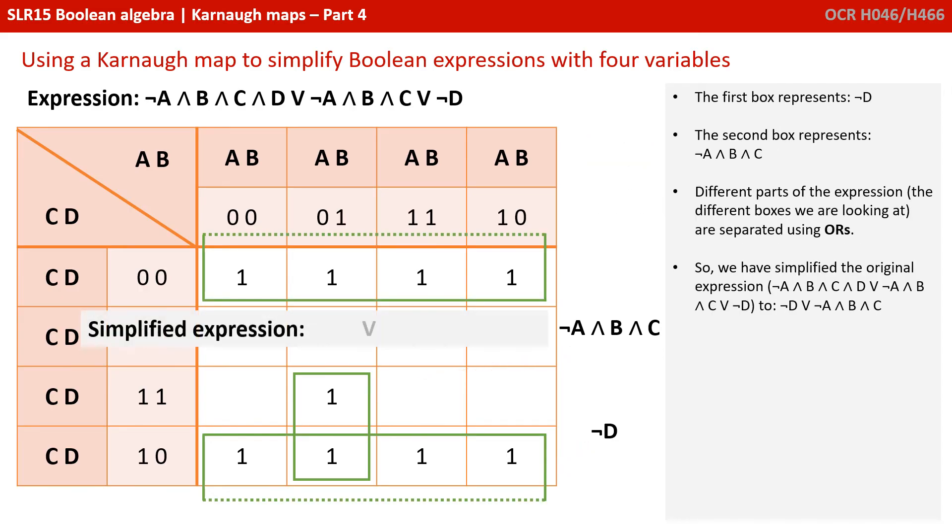So we now know this box can be simplified to NOT A and B and C. The first box represents NOT D. The second box represents NOT A and B and C. And different parts of the expression, so the different boxes we're looking at, are separated by ORs. We've simplified the original expression down to NOT D or NOT A and B and C.